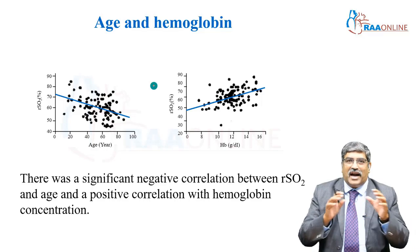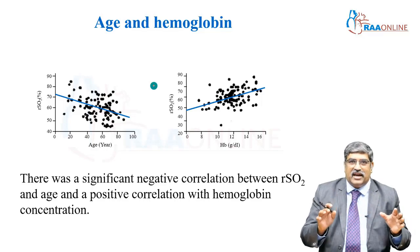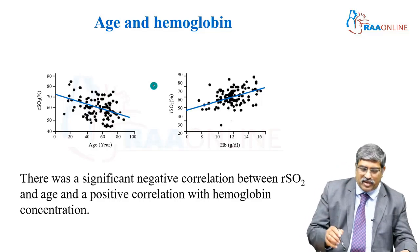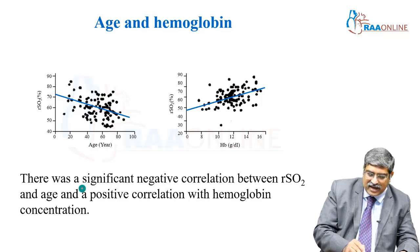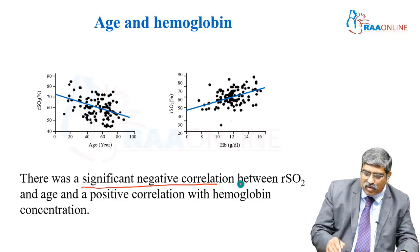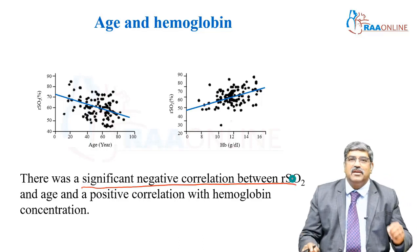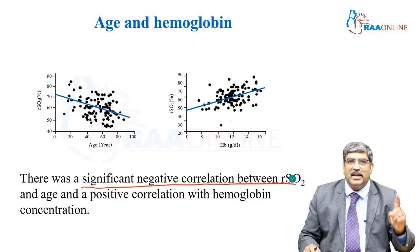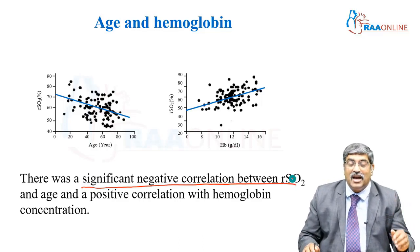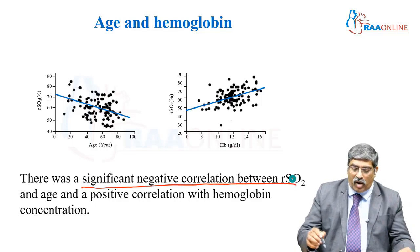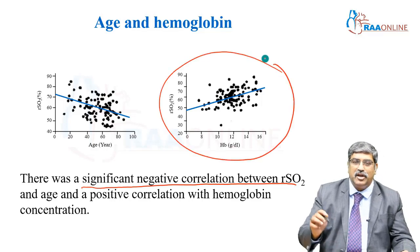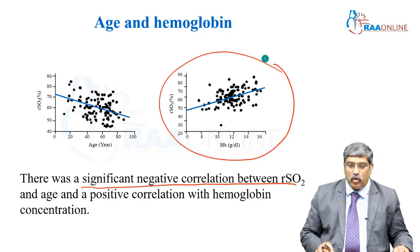Coming to a few factors which can affect cerebral oximetry: there is a negative correlation between cerebral oximetry and age, and a positive correlation with hemoglobin.